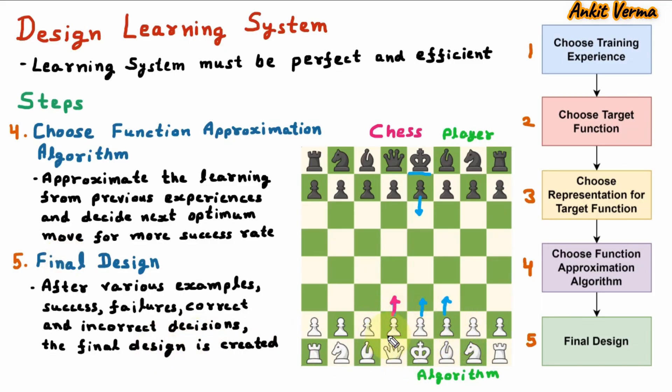Now, this algorithm is played so many times with various players. So it takes so many examples, many times it is having success, many times failures, some correct and incorrect decisions, and afterward the final design is created. So using these steps, we can design the learning system. That's all for today. Thank you.